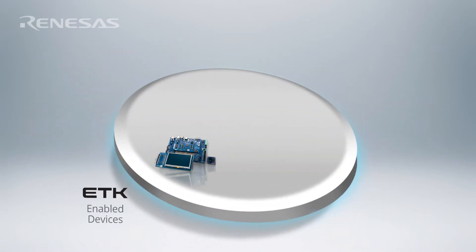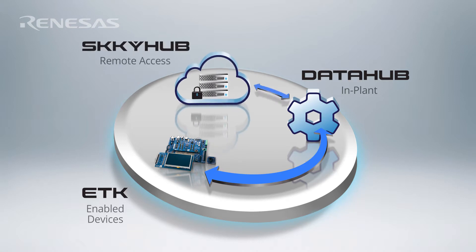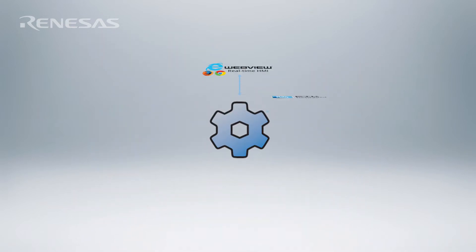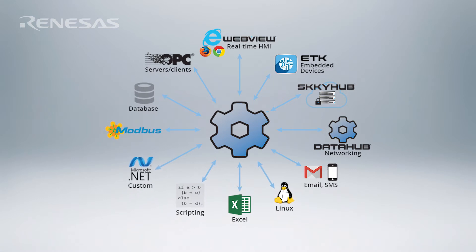With the ETK in your Synergy project, you can connect to the Data Hub for in-plant communications, or move data securely to Skyhub for remote monitoring, control, and visualization on the cloud. In-plant, using the Data Hub as your gateway, your device can connect to any OPC UA DA server or client, Excel, any database, Modbus TCP devices, and any custom programming using our open APIs.